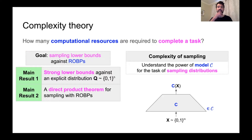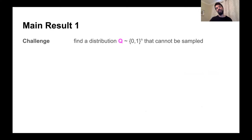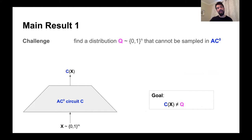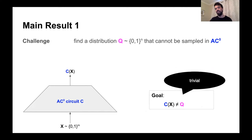Let's start with our strong lower bounds. If we'd like to obtain sampling lower bounds, the first question is: can we find a distribution that cannot be sampled by our computational model? One of the first models this question was examined in were AC0 circuits. The question is: can we find a distribution Q that cannot be sampled by any AC0 circuit? It turns out this is actually trivial — we can take a distribution which assigns an irrational probability to some element in its support. Since the AC0 circuit receives a uniformly random bit string of length M, it cannot possibly sample an irrational probability.